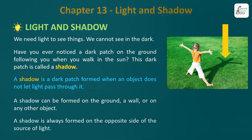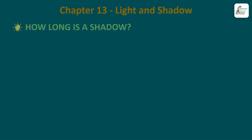A shadow is always formed on the opposite side of the source of light. Source of light matlab jahan se light aati hai, use source kehte hain. Light aati hai - yeh ladki kahan pe hai? Sun mein khadi hai, dhoop mein khadi hai, toh sun kidhar rega? Iske peeche. Aapne perfect guess kiya - iske peeche sun rega toh hi aage uske shadow giregi. Agar sun aage hota toh peeche shadow girti. So yeh opposite side mein shadow girti hai hamesha. A shadow is always formed on the opposite side of the source of light.